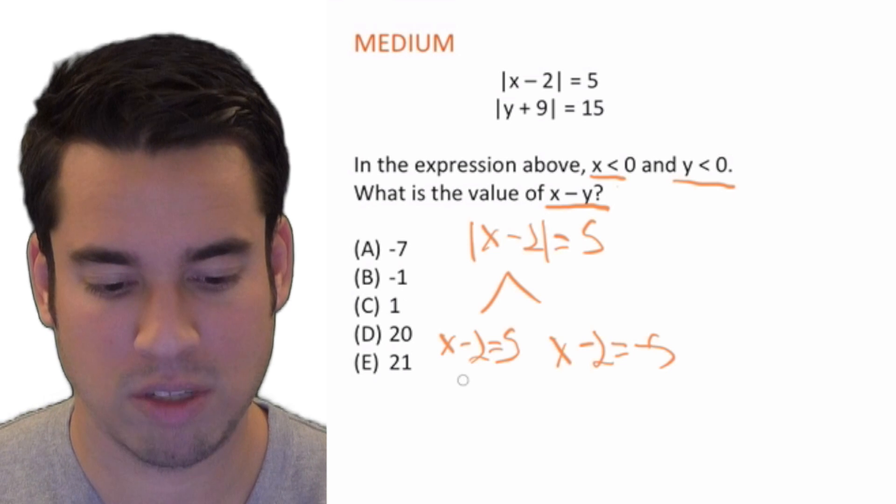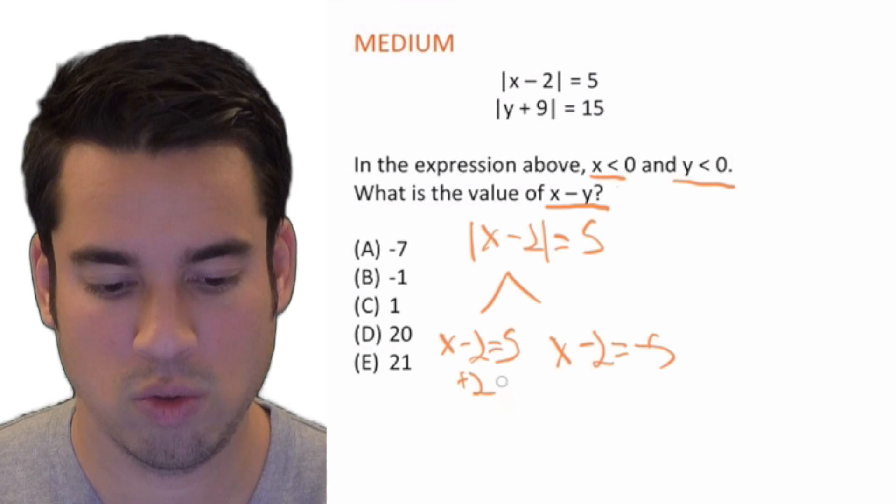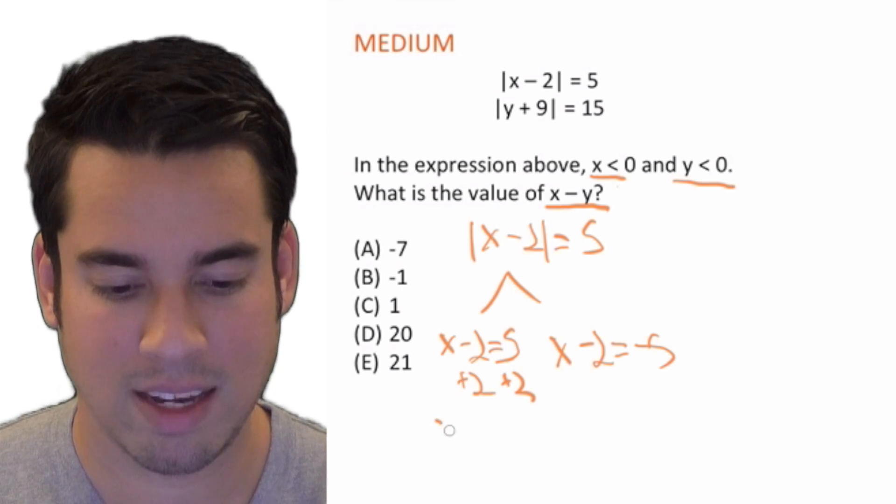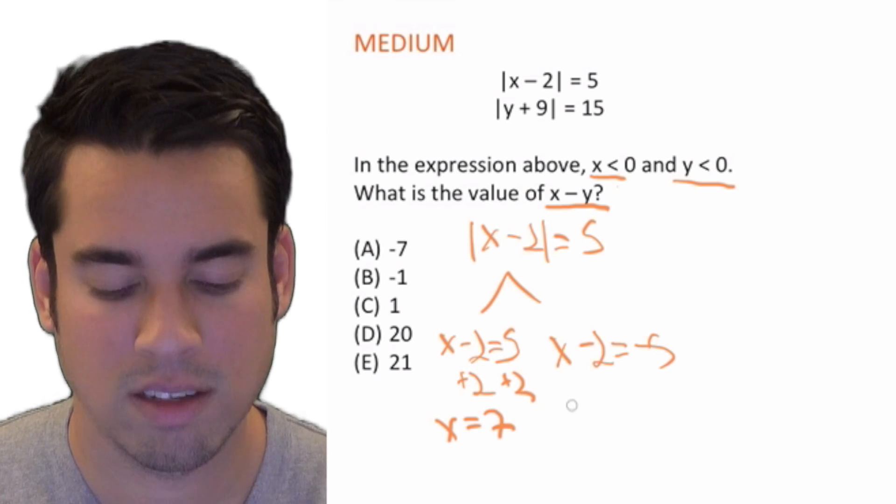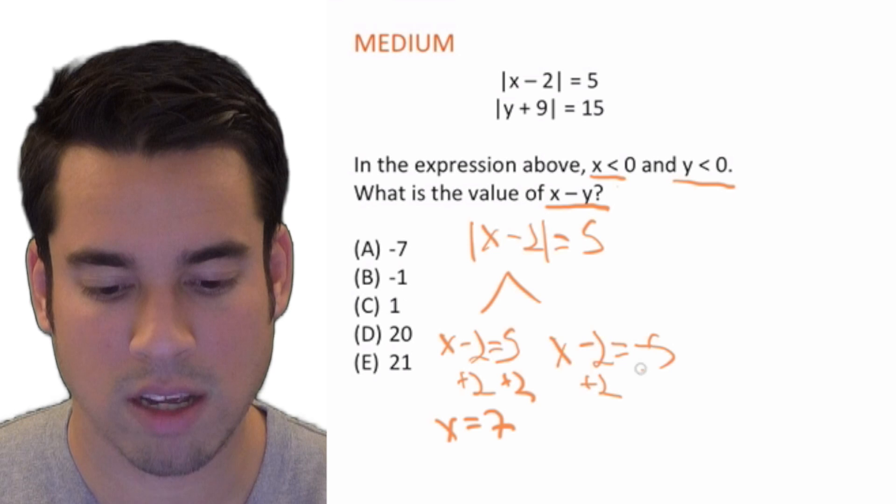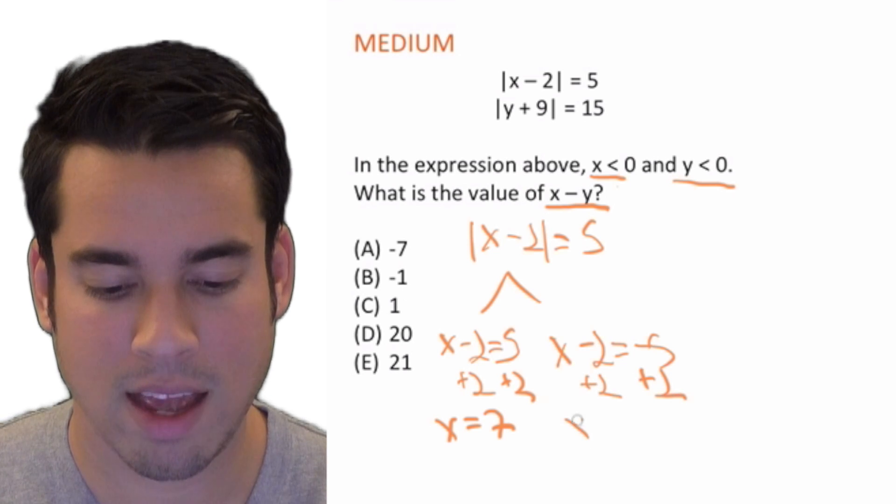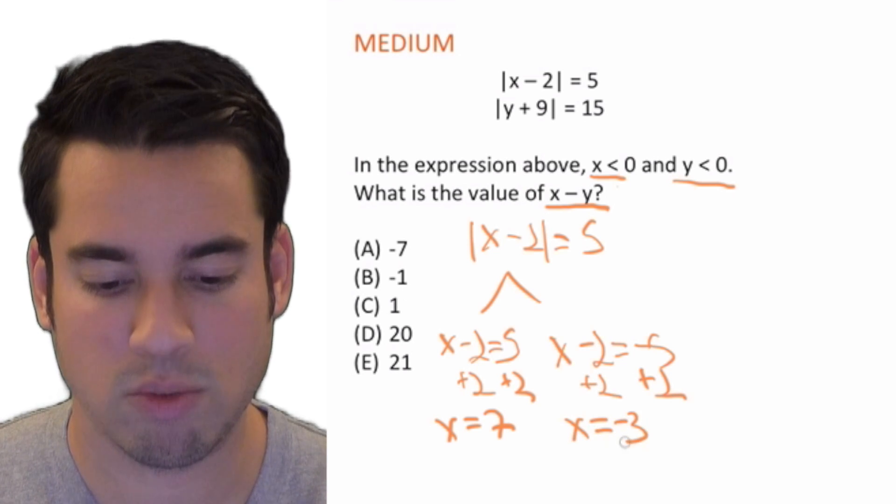And we get x = 7, and on this side we're adding 2 to both sides as well, and we get x = -3, because that's simply -5 + 2.